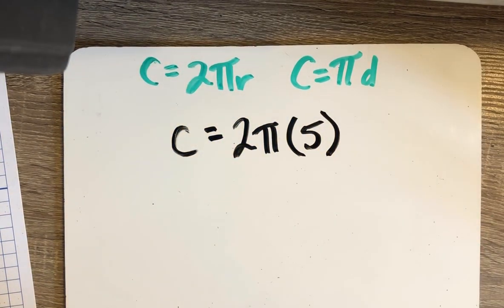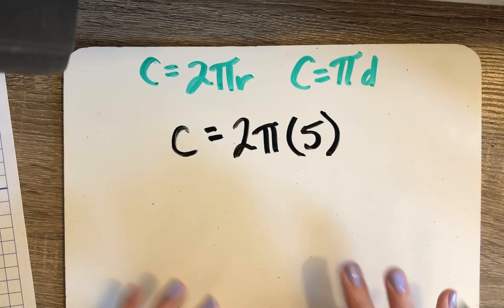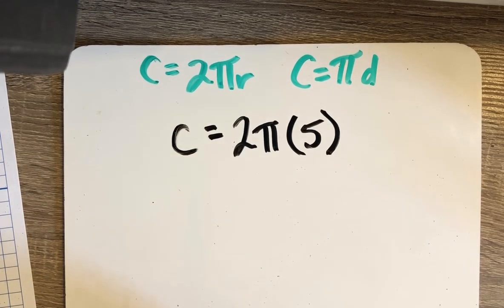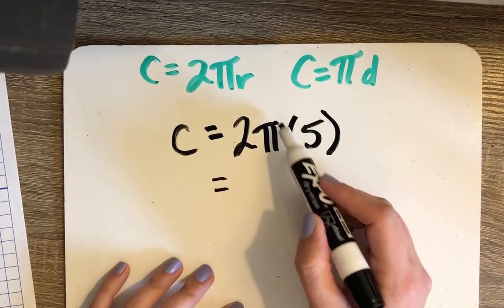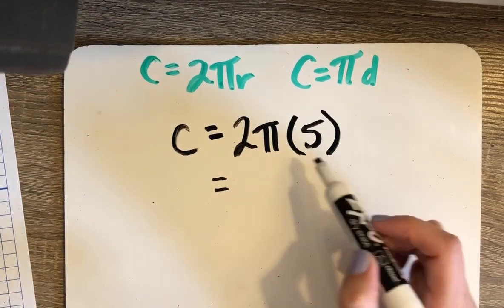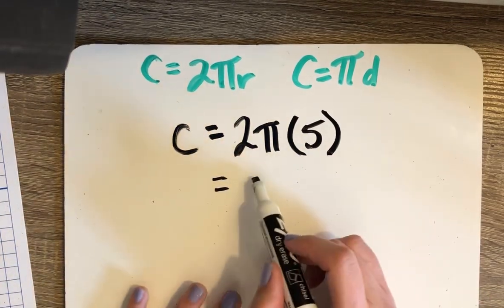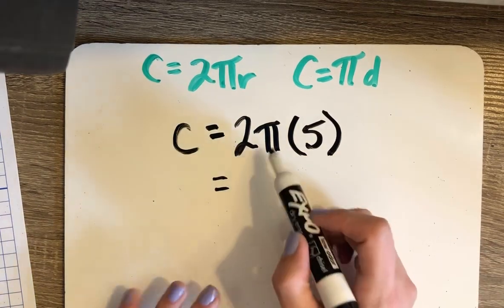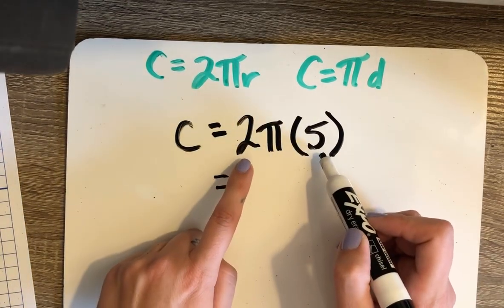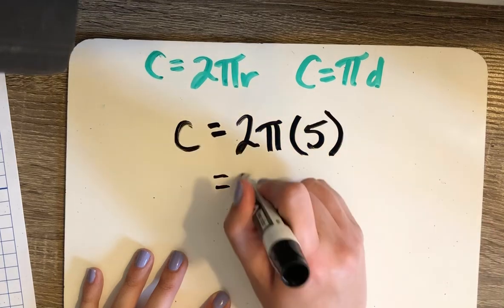Sometimes on the Regents or even in Delta Math it asks for your answer in terms of pi. In that case it means don't calculate pi on the calculator into your answer, just leave it almost like a variable. So I'm going to multiply the numbers that are not pi: 2 times 5 would be 10.